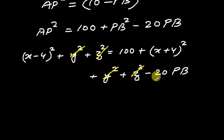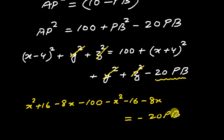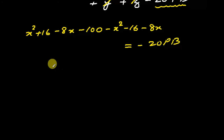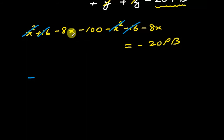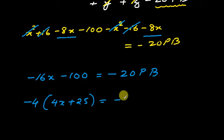Since there is a square root remaining, we take all other terms to the left-hand side and open the brackets. Expanding: x² + 16 - 8x - 100 - x² - 16 - 8x = -20PB. After calculation, x² and -x² cancel. Taking -4 common, we get 4x + 25 = -20PB, and after cancelling -4 we are left with 5.